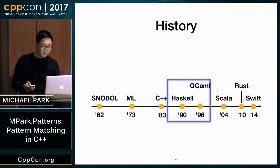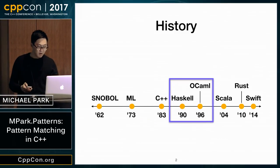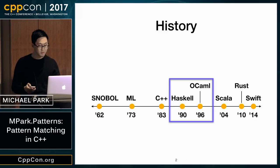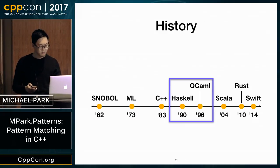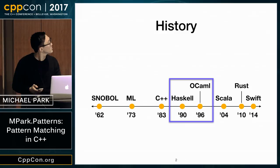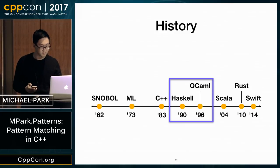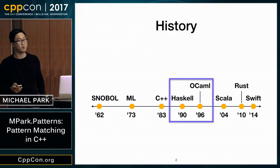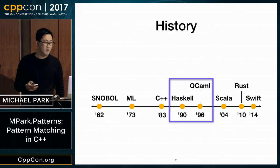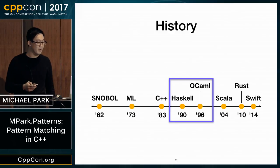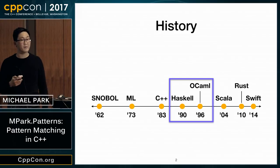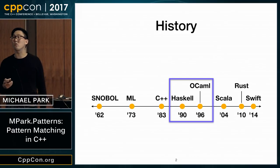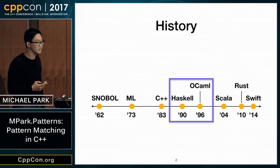In the 1990s, Haskell and OCaml were introduced with pattern matching support, and in fact it's at the very core of most functional programming languages.